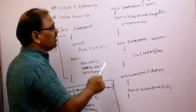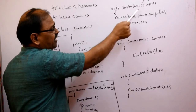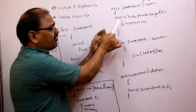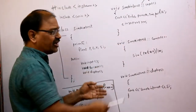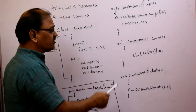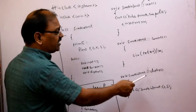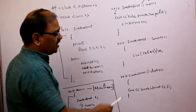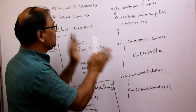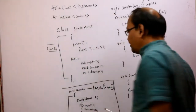Two member functions have been discussed — input and compute. After inputting values and doing the calculation, we have to display the values onto the screen. For this, we are taking one more function called the display function, writing it with the scope resolution operator. The display function outputs: cout simple interest and SI. Three member functions are now defined in the class.